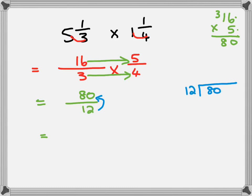We can probably go in 6 times. 6 times 12 is 72. 80 minus 72 is 8. So it's 6 and 8 over 12. 6 and 8 over 12.